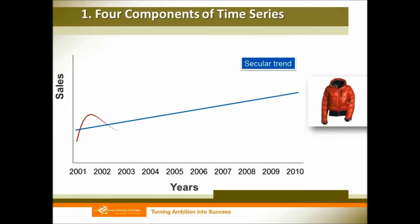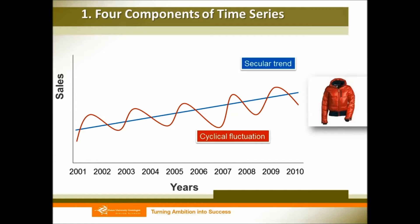We know that our economy also experiences a cyclical trend, so we call this cyclical variation. For example, sometimes the economy has got prosperity, and sometimes it has got recession or depression.